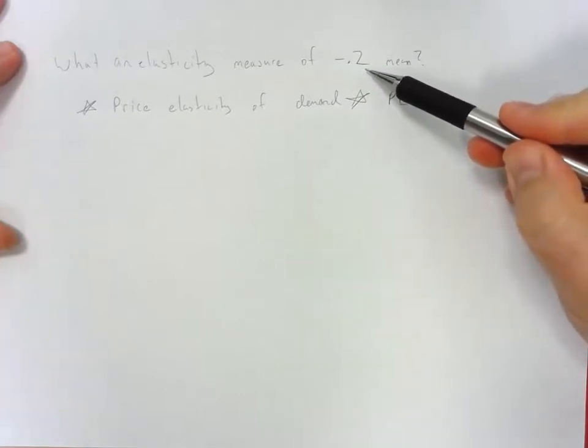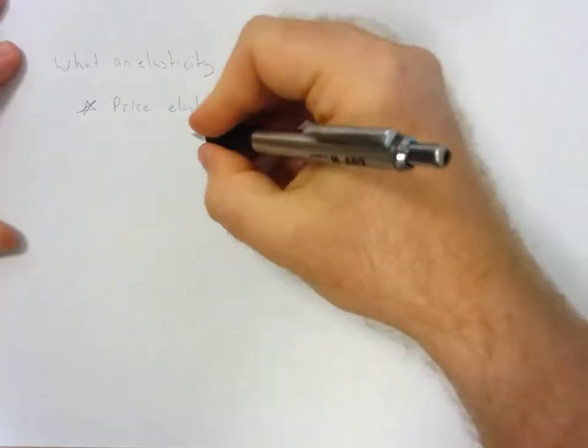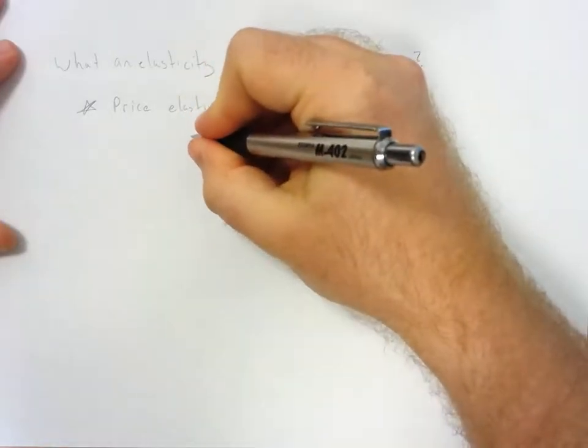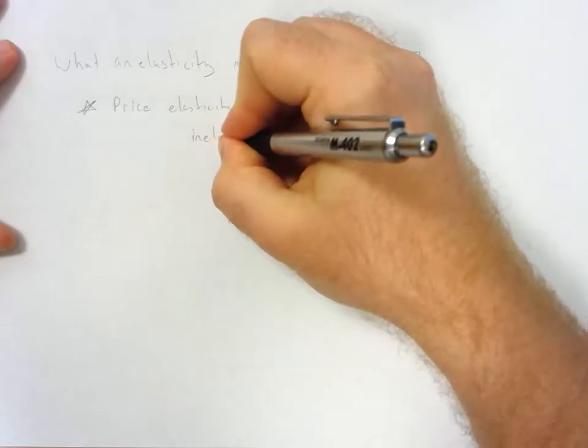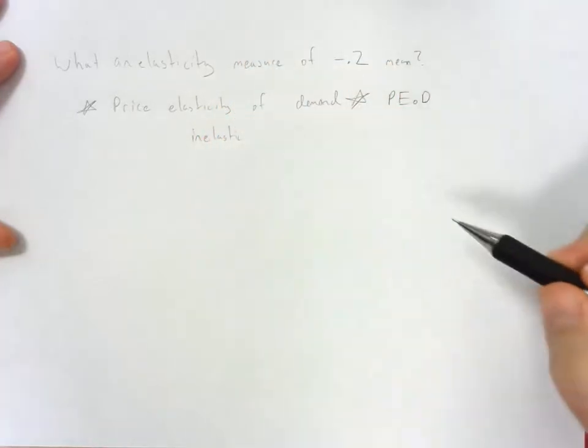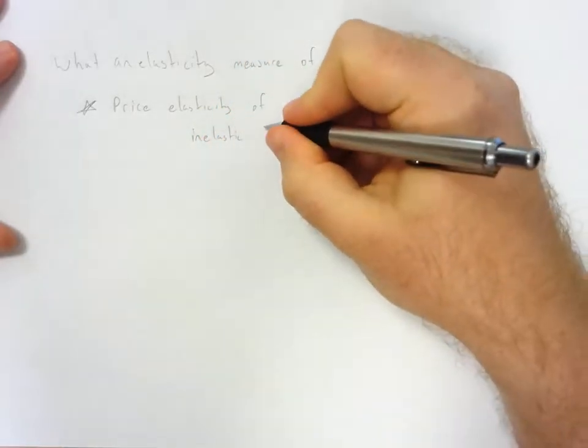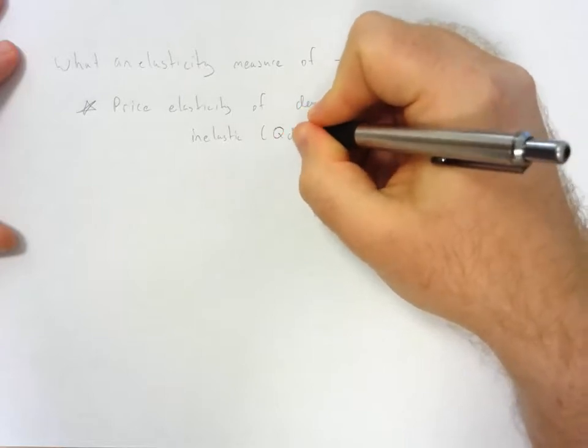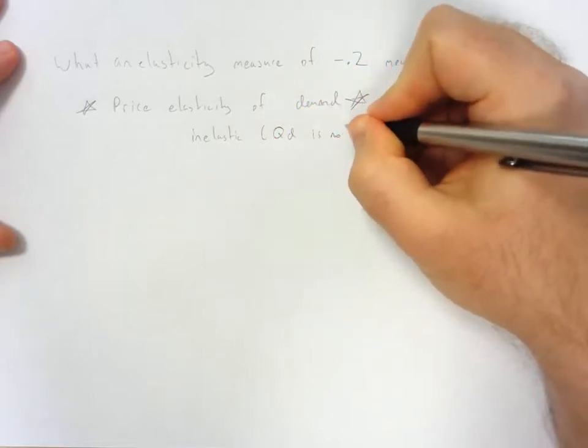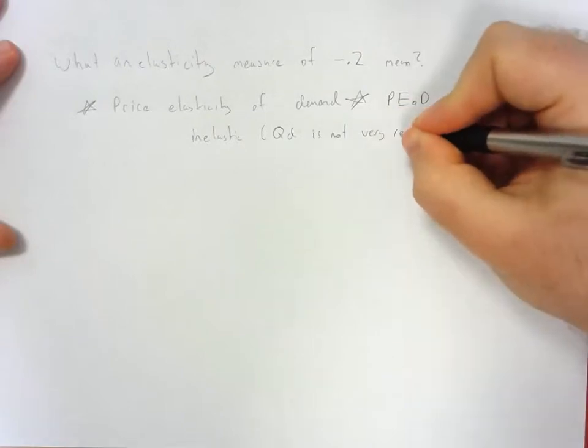If we are looking at price elasticity of demand, a price elasticity of demand measure of negative 0.2 basically means that we have an inelastic price elasticity of demand, which means that quantity demanded is not very responsive to price changes.